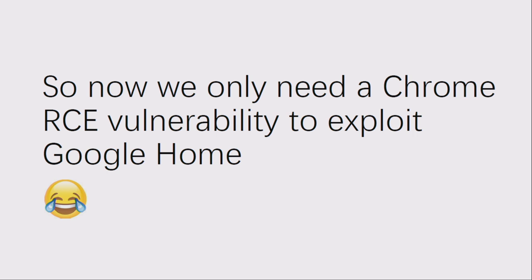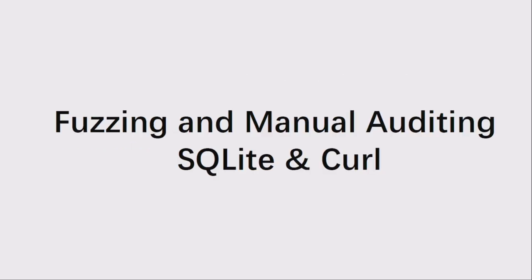So now we only need a Chrome RCE vulnerability to exploit Google Home. Now, Chen Wenxiang will introduce the Magellan and DS vulnerabilities. We will introduce the code auditing and exploiting of Magellan — a set of vulnerabilities in SQLite — and DS, a set of vulnerabilities in libcurl.